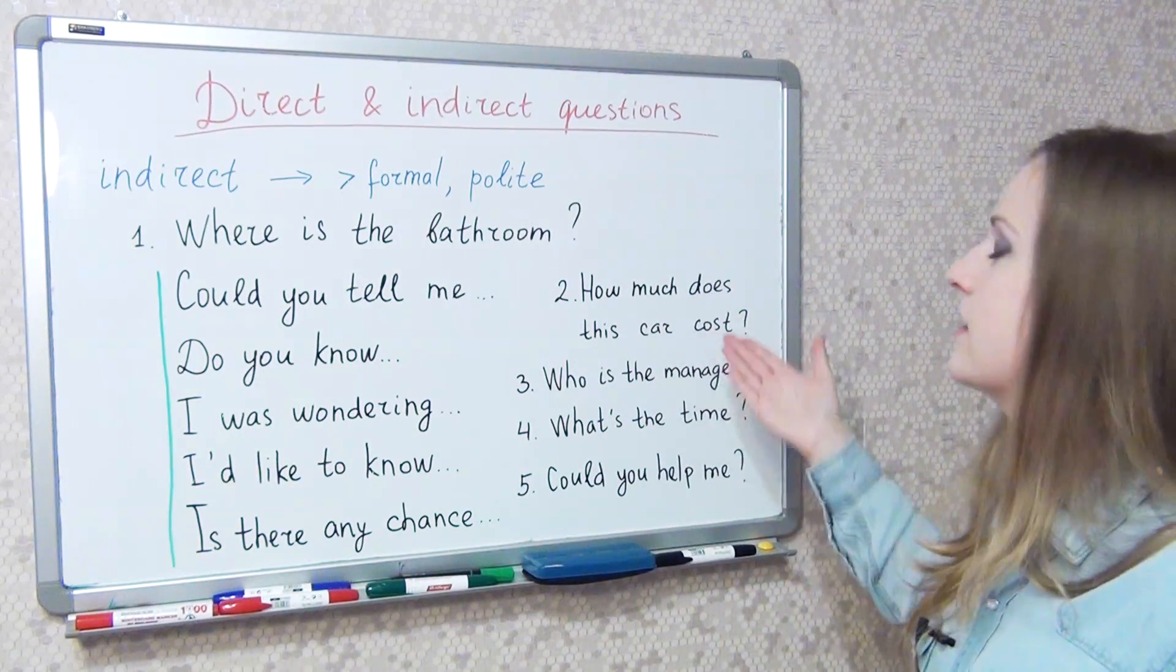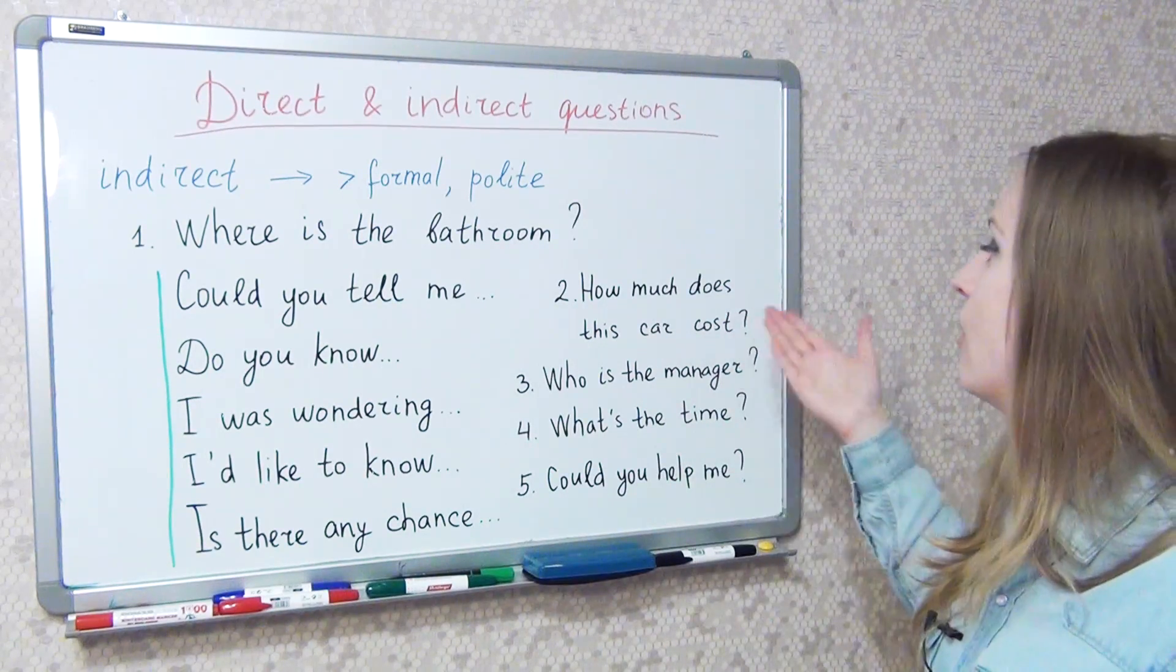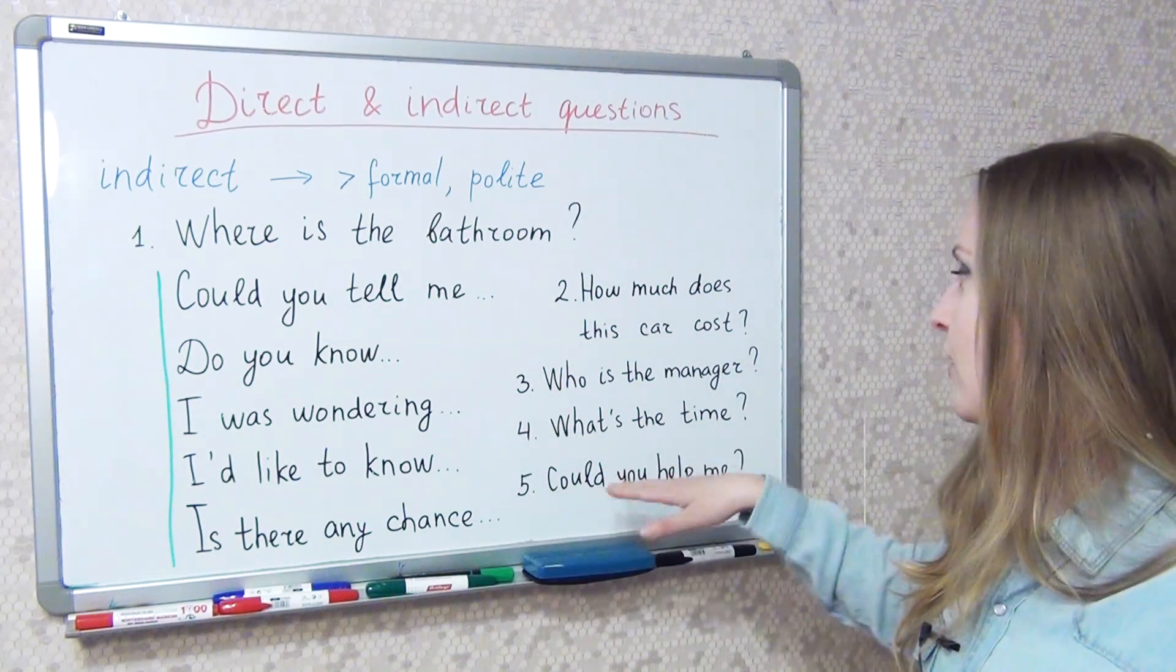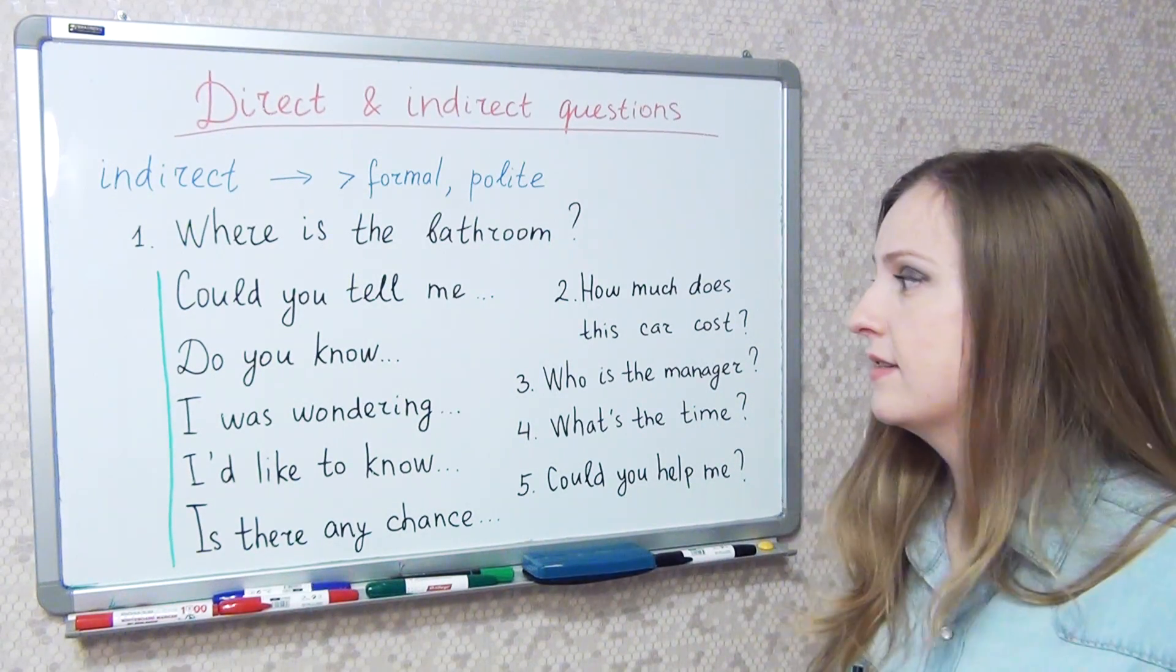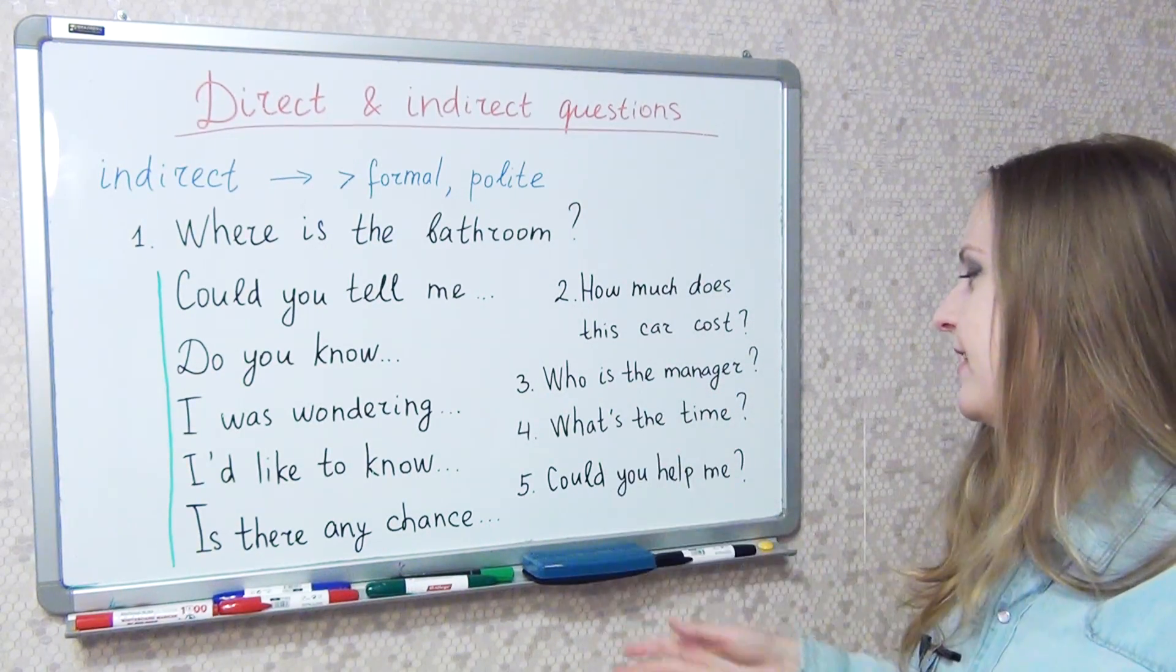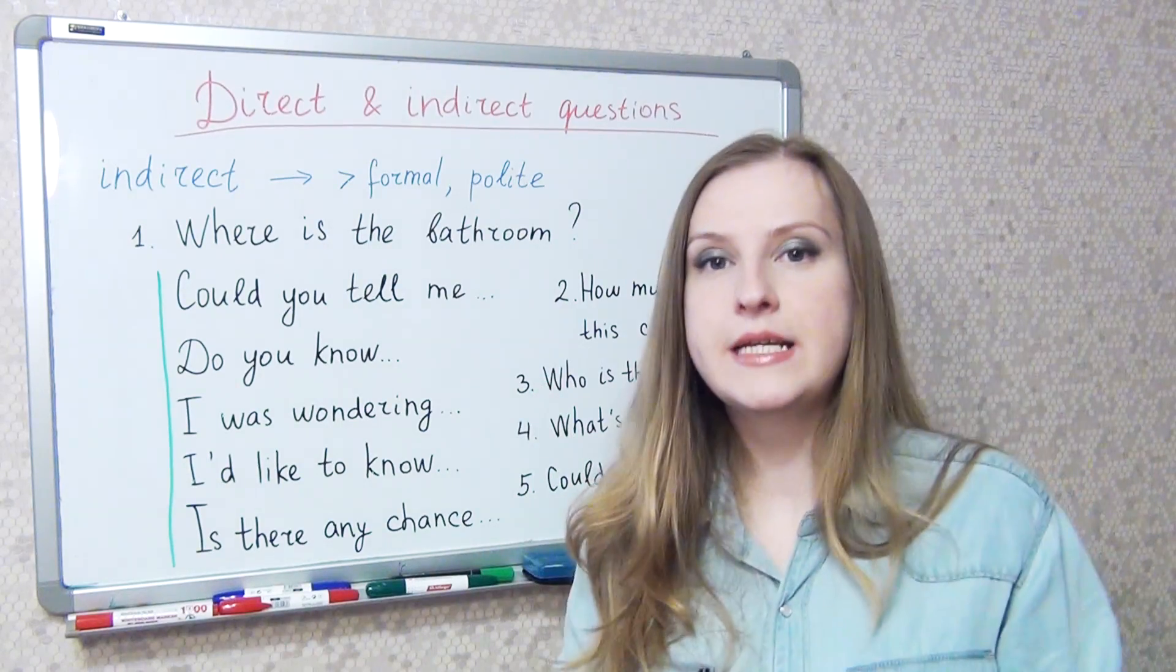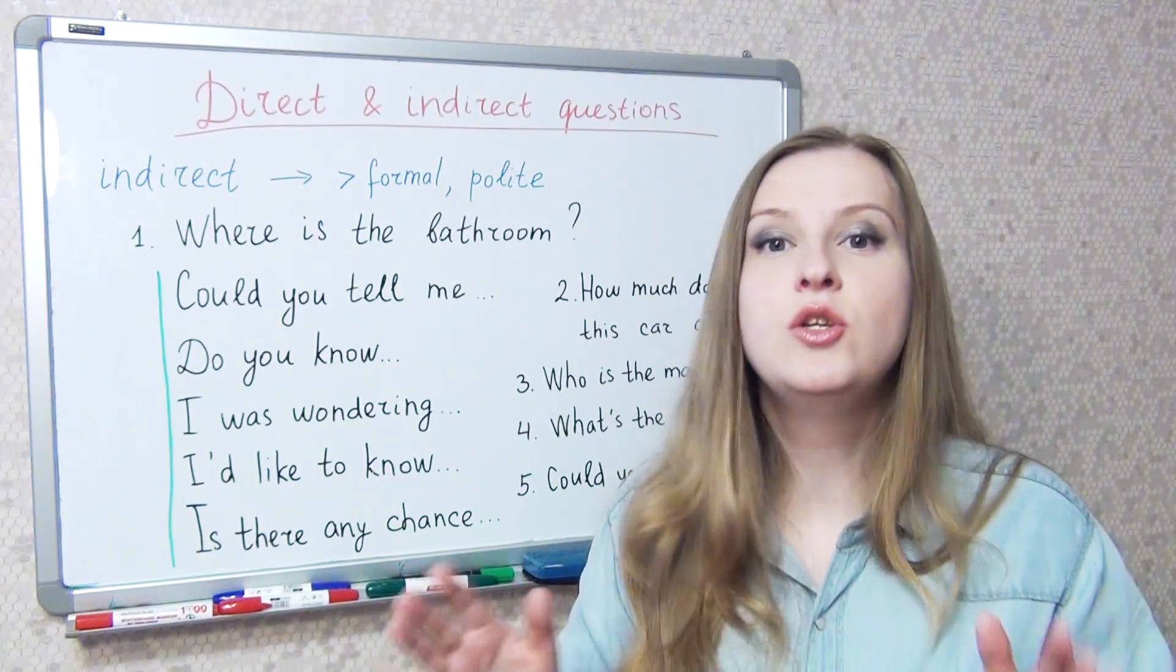And here are my variants. Do you know how much this car costs? Or could you tell me please how much this car costs? I was wondering who's the manager? I'd like to know what the time is. Do you know what the time is? Different variants. Is there any chance you could help me? Notice that in all indirect questions the word order is as in a statement, no inversion.